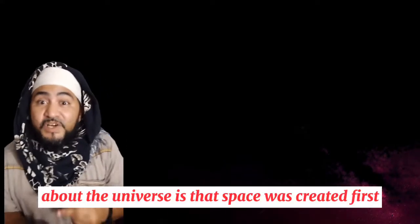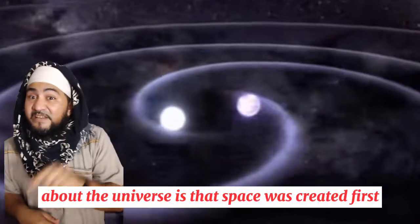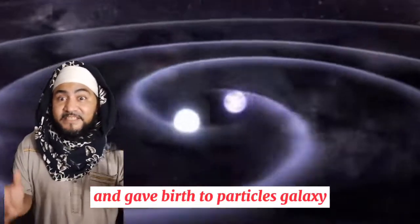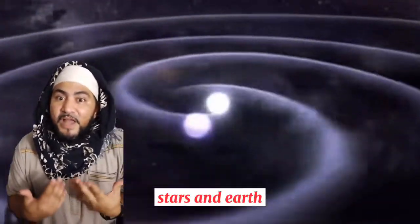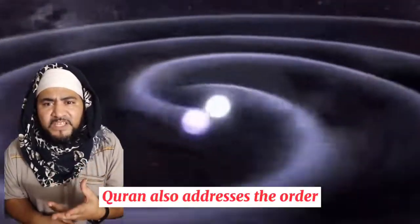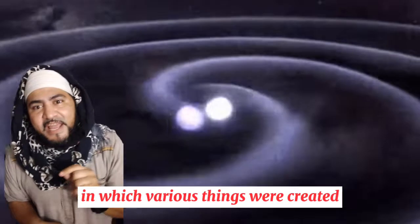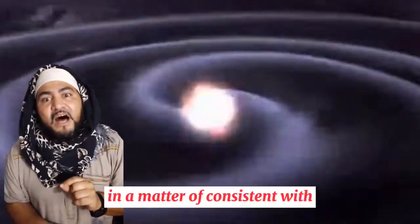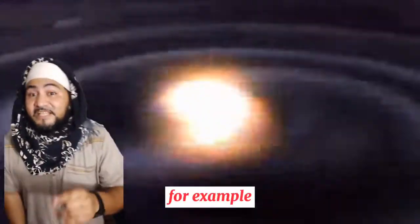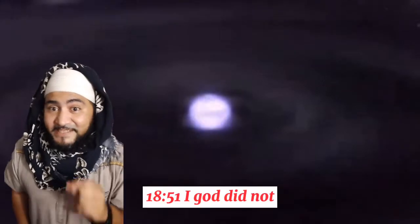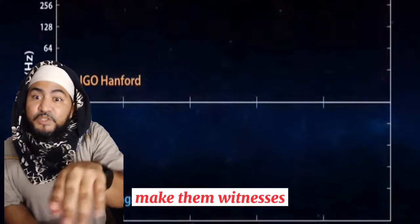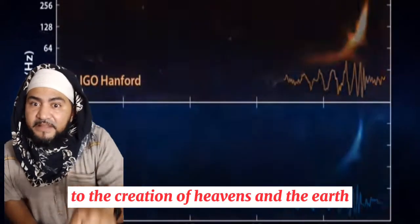What we know about the universe is that space was created first and gave birth to particles, galaxies, stars, and Earth, and you and me. The Quran also addresses the order in which various things were created in a manner consistent with what science has discovered. For example, in chapter 18 verse 51 it says: 'I, God, did not make them witnesses to the creation of heavens and the earth, or the creation of themselves.'